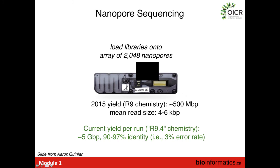Multiplying the sequencing speed of 500 bases per second times the number of pores, the theoretical throughput of the nanopore sequencer is around 30 to 40 gigabases. Typically in the field we're seeing between 5 to 10 gigabases of yield, which is comparable to the latest PacBio chemistry.